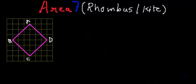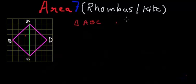I have drawn diagonal AC, which is dividing our rhombus into two triangles. The first triangle is triangle ABC and the second triangle is triangle ADC.